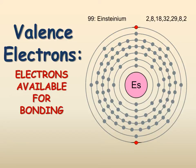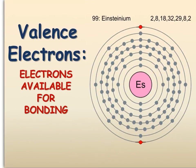If you look at Einsteinium, it has tons of electrons. They form these rings around the nucleus, but really the only electrons that are available for bonding are the ones in the outermost circle. These red ones here, and those are your valence electrons.